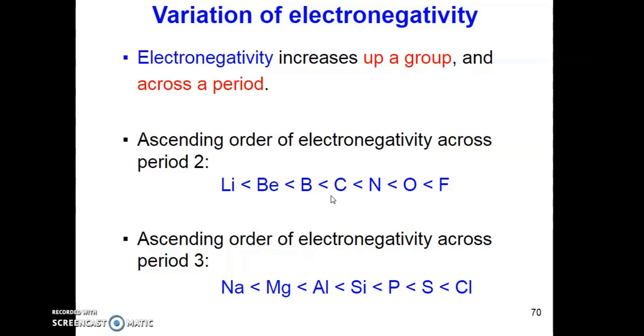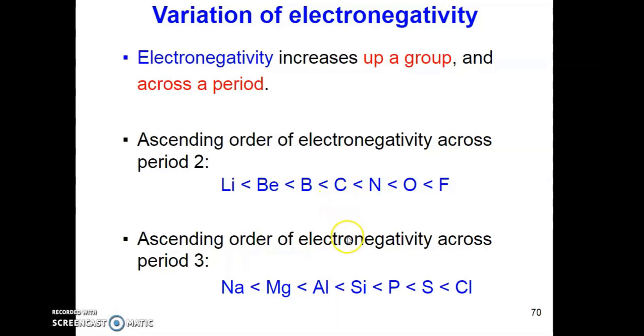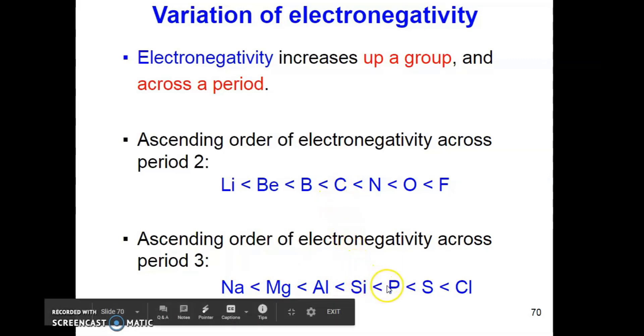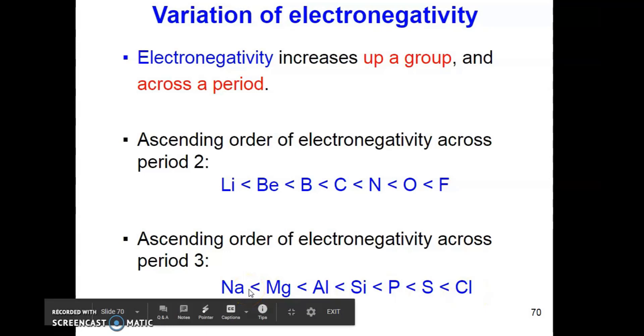The order of electronegativity is increasing as we go across period 3 from sodium in group 1 towards chlorine in group 17. The electronegativity for sodium is lowest followed by magnesium, aluminium, silicon, phosphorus, sulfur and chlorine.